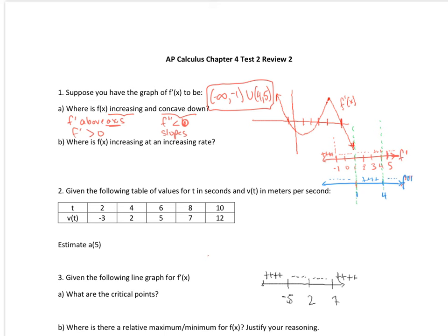Now for Part B, we are taking a look and we want f of x to be increasing at an increasing rate. So f of x increasing means f prime is greater than 0, and increasing rate means we're looking at the second derivative to also be greater than 0. Looking in the region between 3 and 4, I've got positive values for the first derivative and positive values for the second derivative. So f of x is increasing at an increasing rate on the interval from 3 to 4.